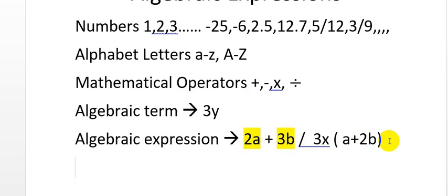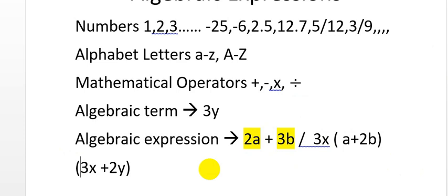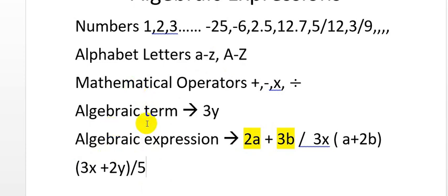Another example of an algebraic expression: (3x + 2y) divided by 5. This is an algebraic expression because we have alphabetical letters — the unknown terms — and numbers connected using mathematical operators. Now you have a good understanding of the difference between an algebraic term and an algebraic expression.